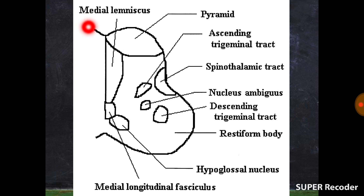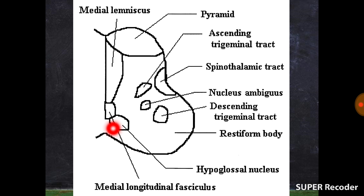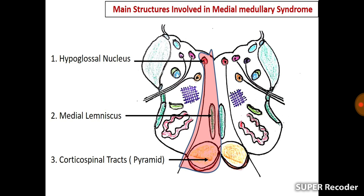Looking at a cross-section of the medulla and going from anterior to posterior, first you'll encounter the pyramids — basically the corticospinal tract. Behind that is the medial lemniscus, which carries fibers from the dorsal column tracts after they have decussated in the medulla. Further posteriorly is the hypoglossal nerve nucleus. These three structures are the important structures present in the medial part of the medulla, and our clinical presentation will depend on which of them are involved.